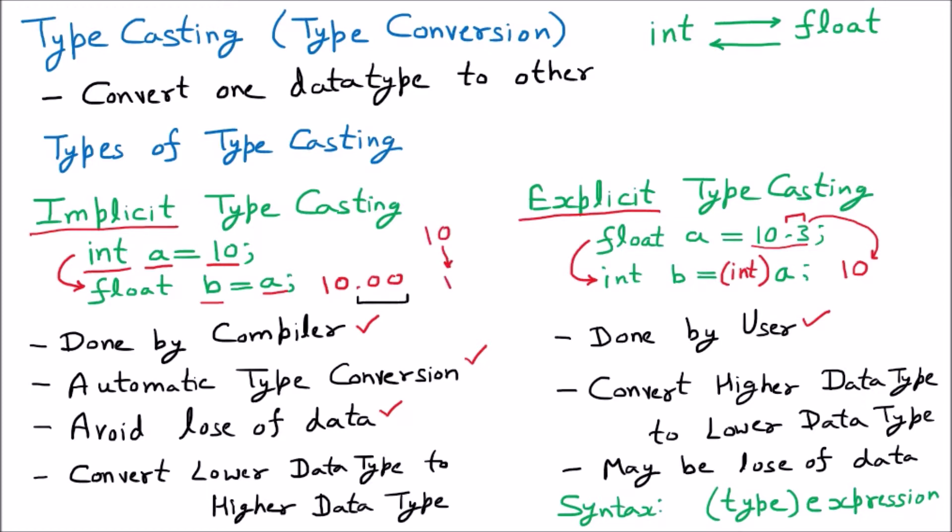But here there can be loss of data. This means if we are converting 10.3 float value to integer value, it will convert from 10.3 to 10. So this 0.3 is lost now. That's why data may be lost - 'may' is one more point.